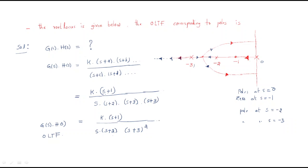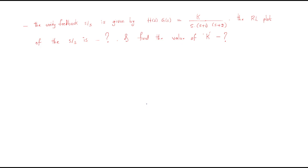The open loop transfer function is K(s + 1) / [s(s + 2)(s + 3)²]. So whenever you have to convert a root locus to an open loop transfer function, first write the format of the open loop transfer function, then recognize each pole and zero from the root locus diagram, and then construct the transfer function accordingly.